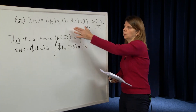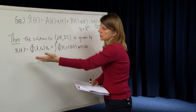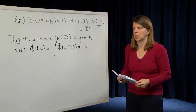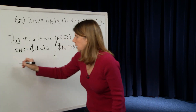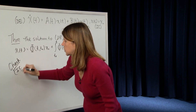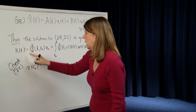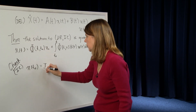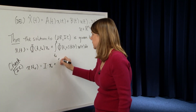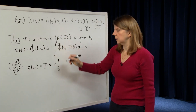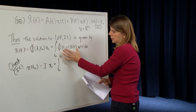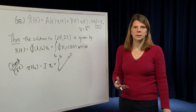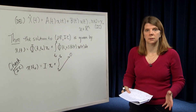To prove this is the solution, since there is only one solution, we just need to check that the candidate satisfies the differential equation and the initial condition. First, checking the initial condition: plugging t-zero in for t, we get phi of t-zero comma t-zero, which is the identity by definition, times x-zero, plus the integral from t-zero to t-zero, which is zero. So the candidate solution equals x-zero at the initial time.